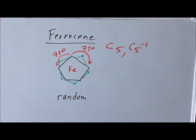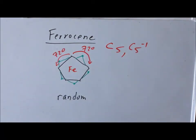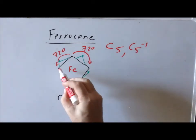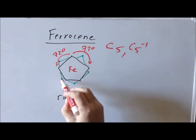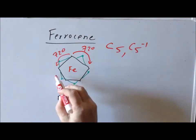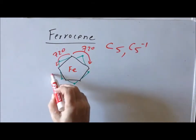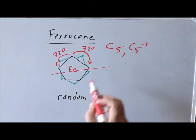Next we want to look for C2 axes that might be perpendicular to the high-order rotation axis. We can find them in this type of molecule. The trick is to look at the vertex of the black ring and the vertex of the green ring and go exactly halfway in between on opposite sides — there will be a C2 there.